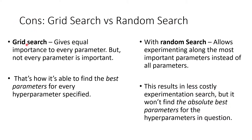Grid Search gives equal importance to every single parameter. The problem with that is that not every parameter is equally important, but because it gives equal importance to all, it is able to find the best value for every specified hyperparameter. With Random Search, on the other hand, it allows experimenting along the most important parameters instead of all of them. So if you give it 100, 200, 300, 400, 500 for number of estimators, it might try 200 and 500 but skip 100, 300, and 400 — it does a random search rather than an exhaustive one.